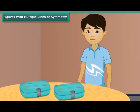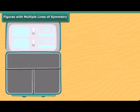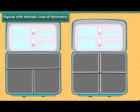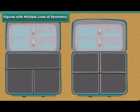Archie has two lunch boxes. One has three lines of symmetry. She doesn't like this box and keeps it away. She picks up another one. Let us check out. Oh, this box has four lines of symmetry.